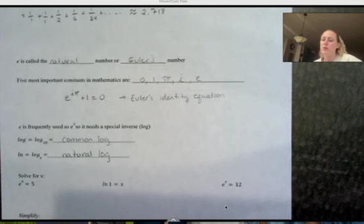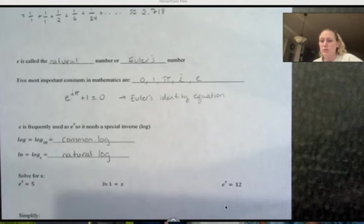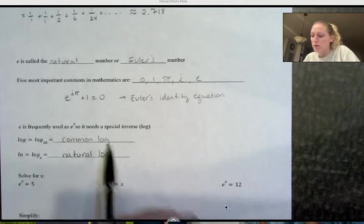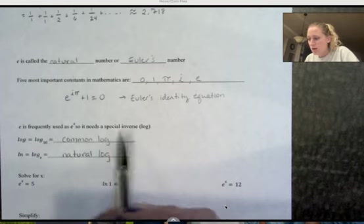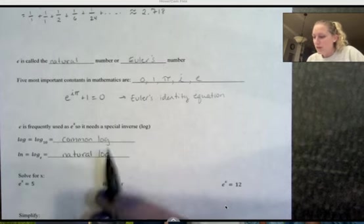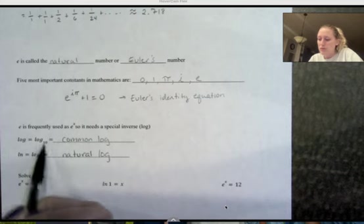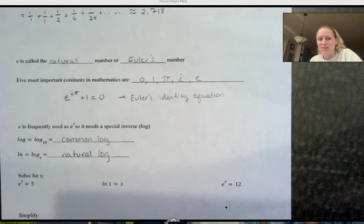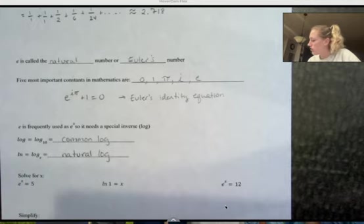So where we're going to be using e is we often use it in exponential equations. So we'll see it as e to the x pretty frequently. And when we're solving exponential equations, we use inverses. So the inverse of an exponential is a log. So e has its own inverse, and we call it the natural log.